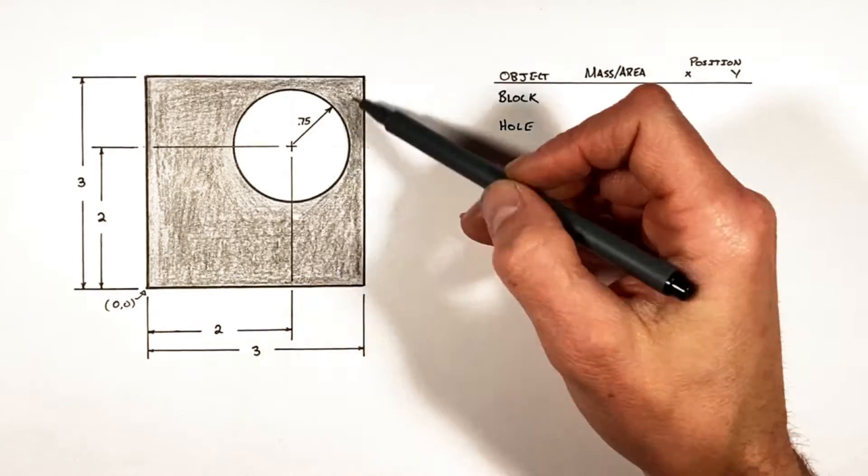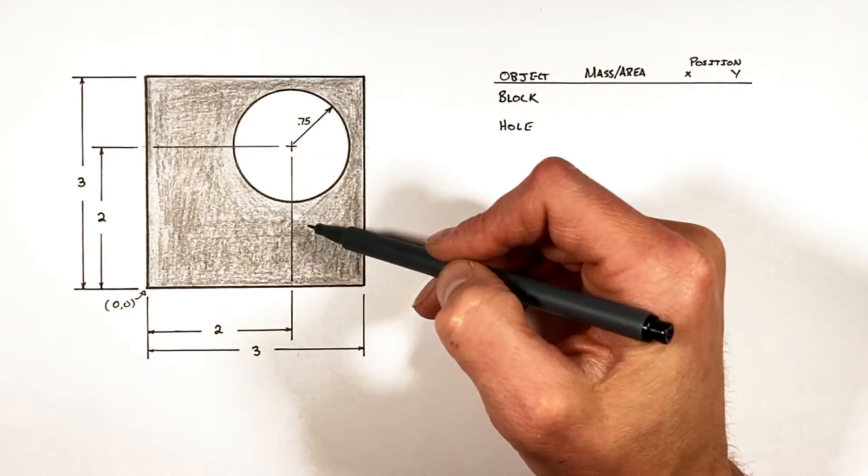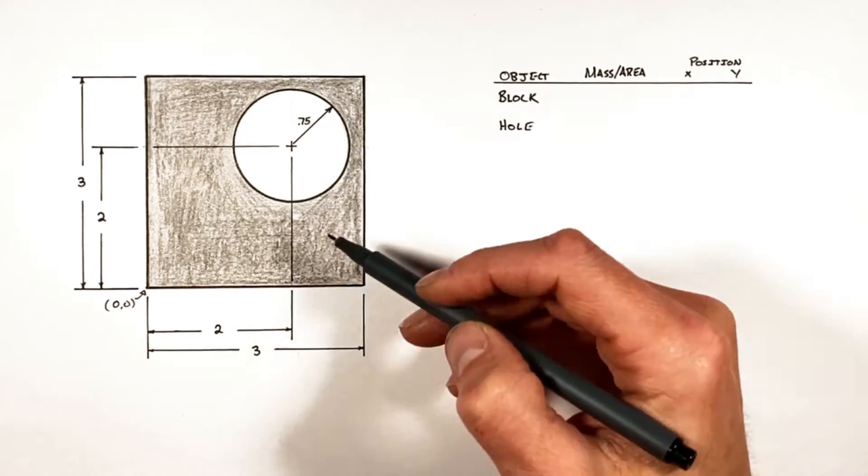We don't know anything about the mass of this block, but what we do know is that if this material is of uniform thickness, then the mass and area are going to be proportional to each other.